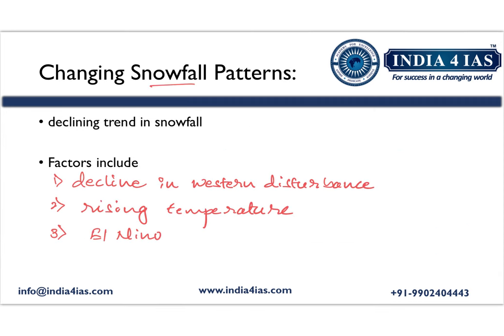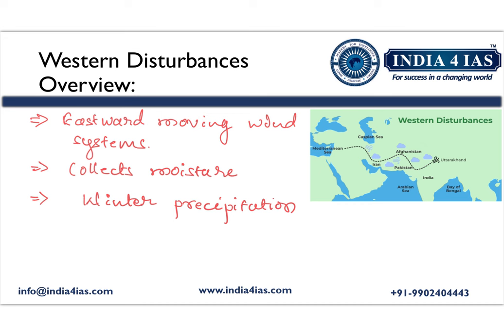There are also changes in snowfall patterns — a declining trend in snowfall in the months of December and January. The factors responsible for this decline are: decline in western disturbances, rising temperatures, and the El Niño effect in the Pacific Ocean.